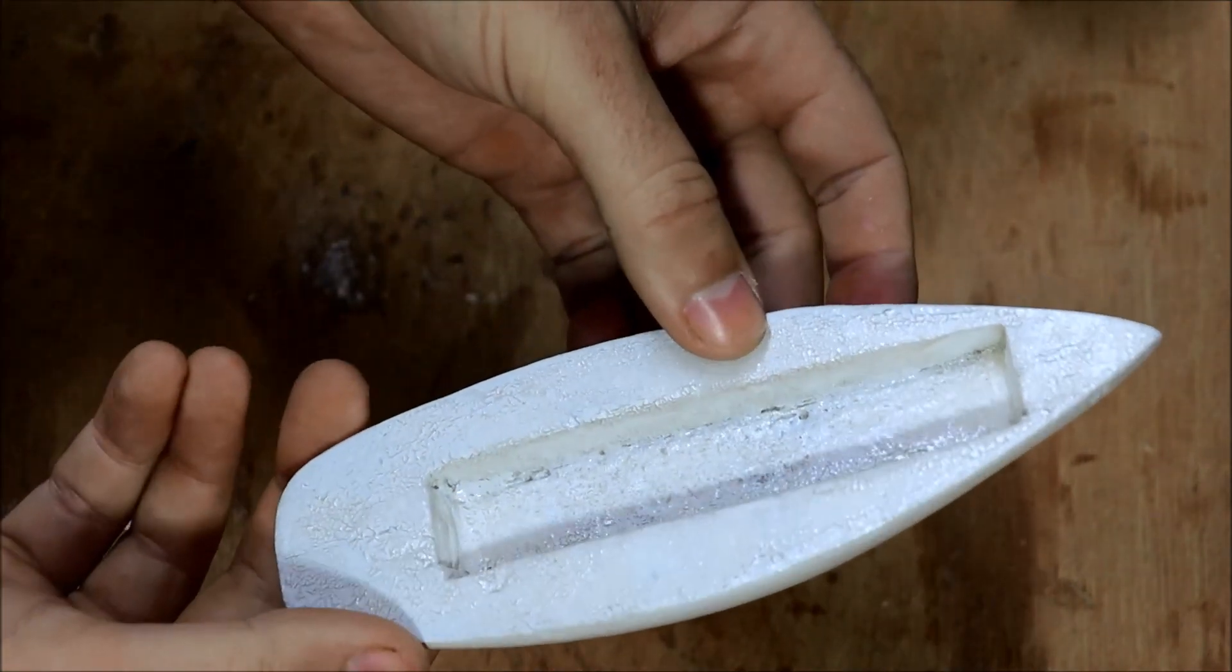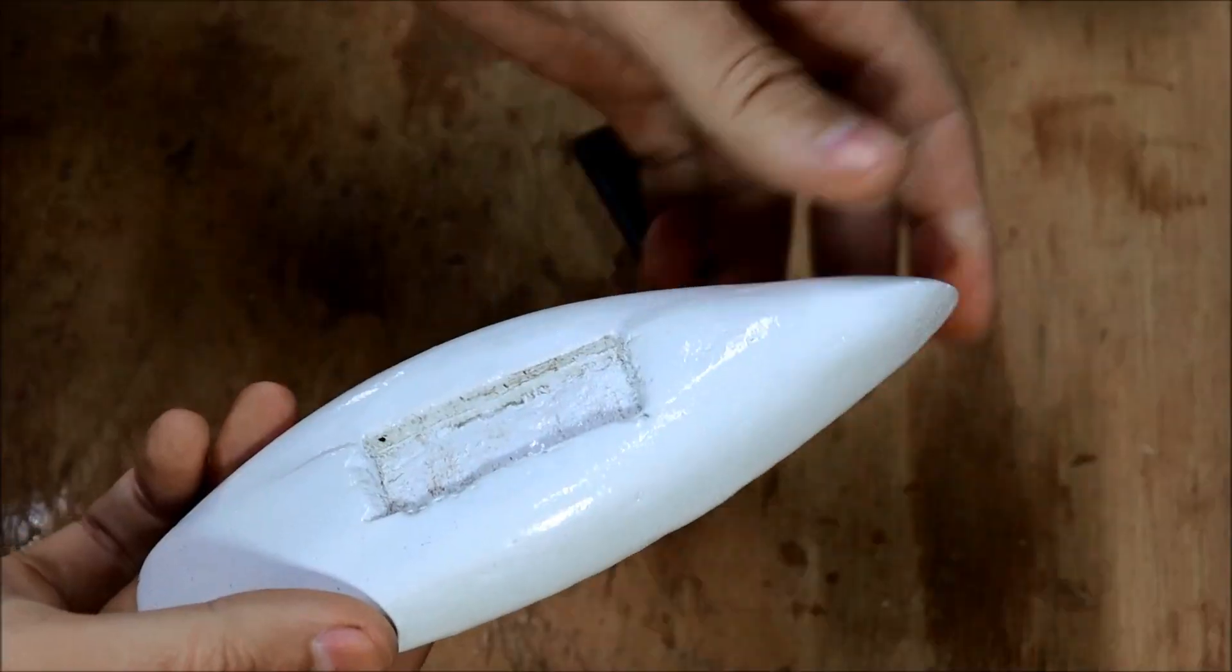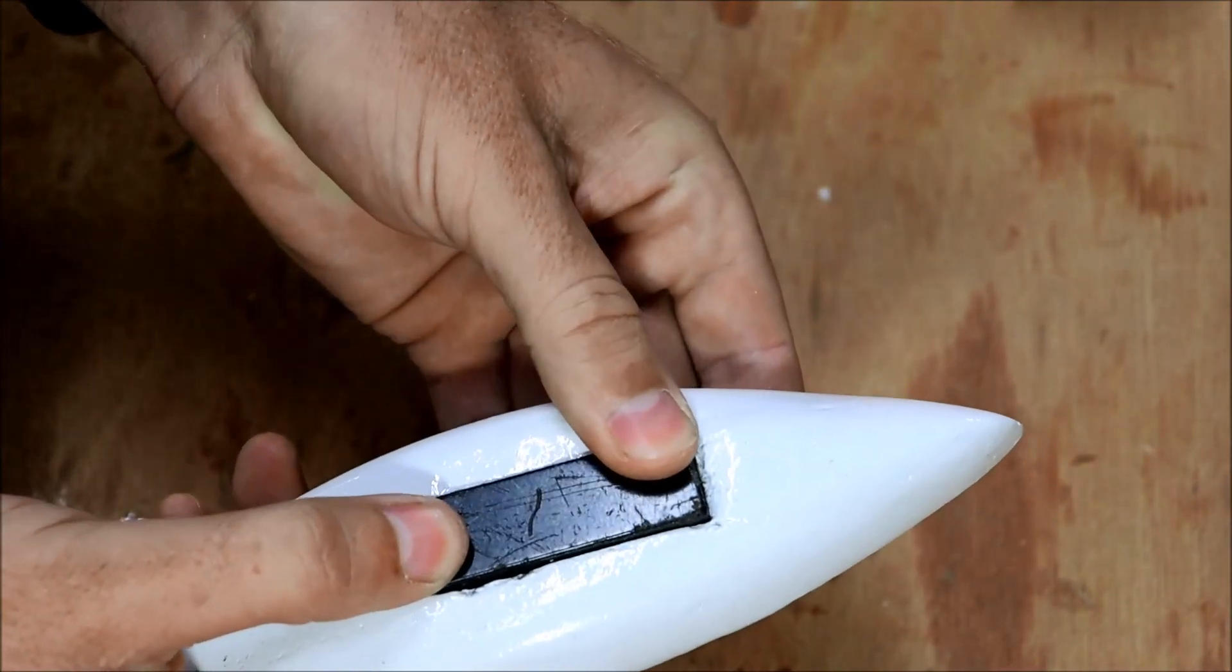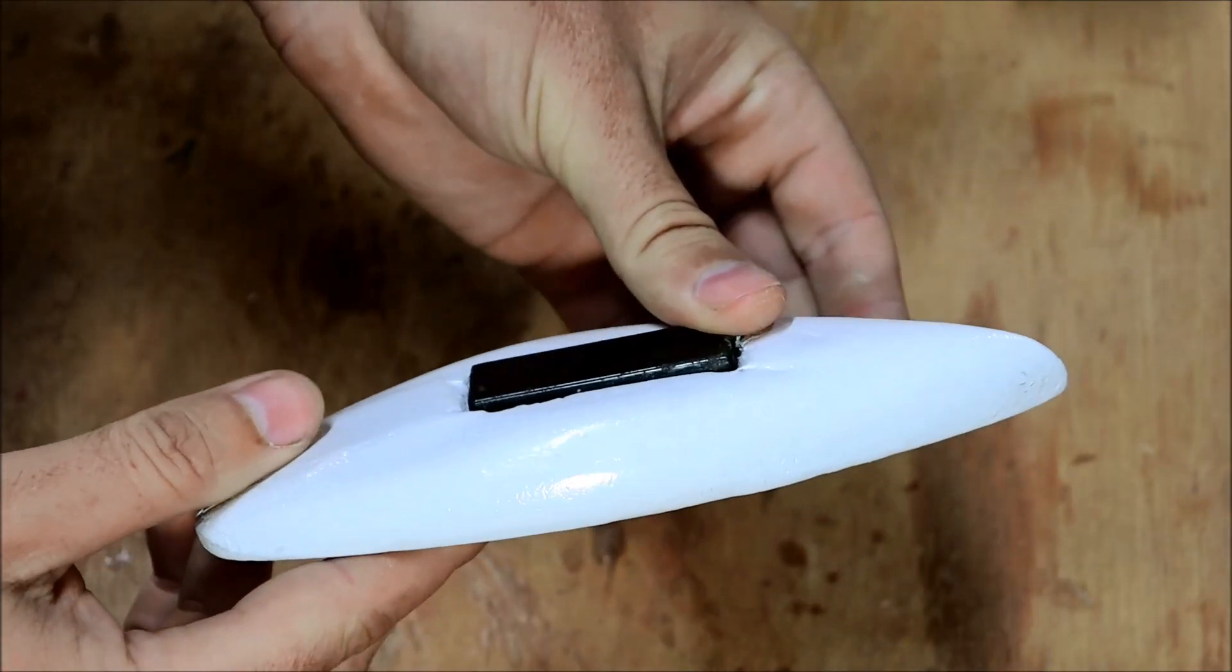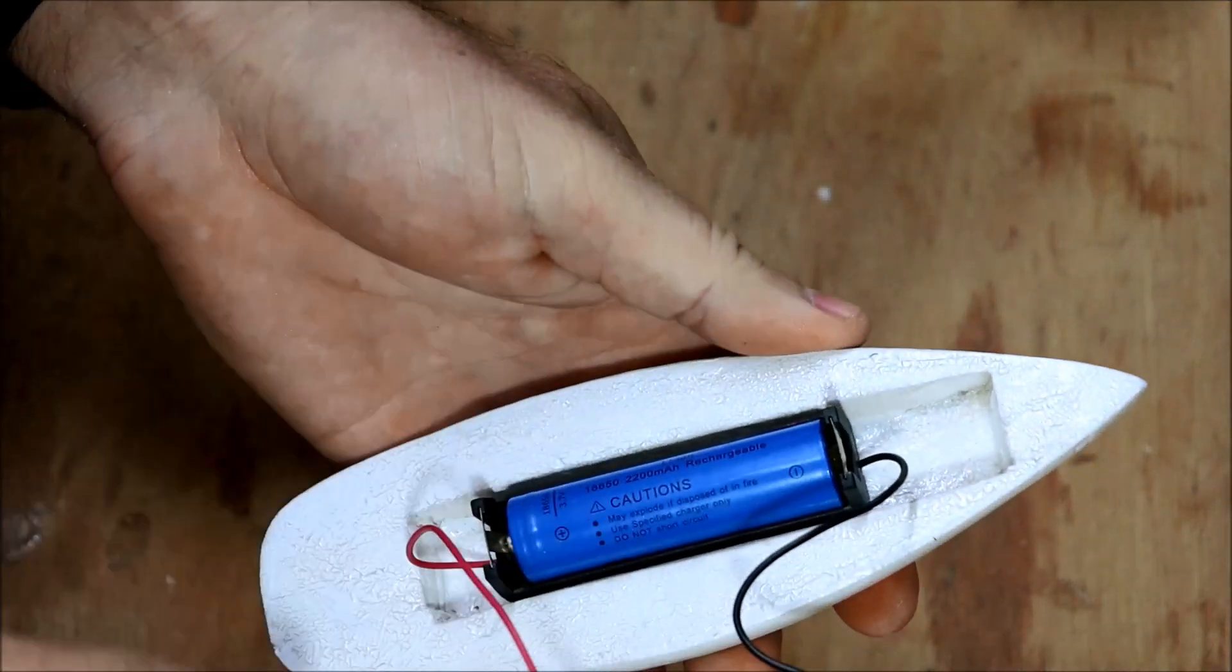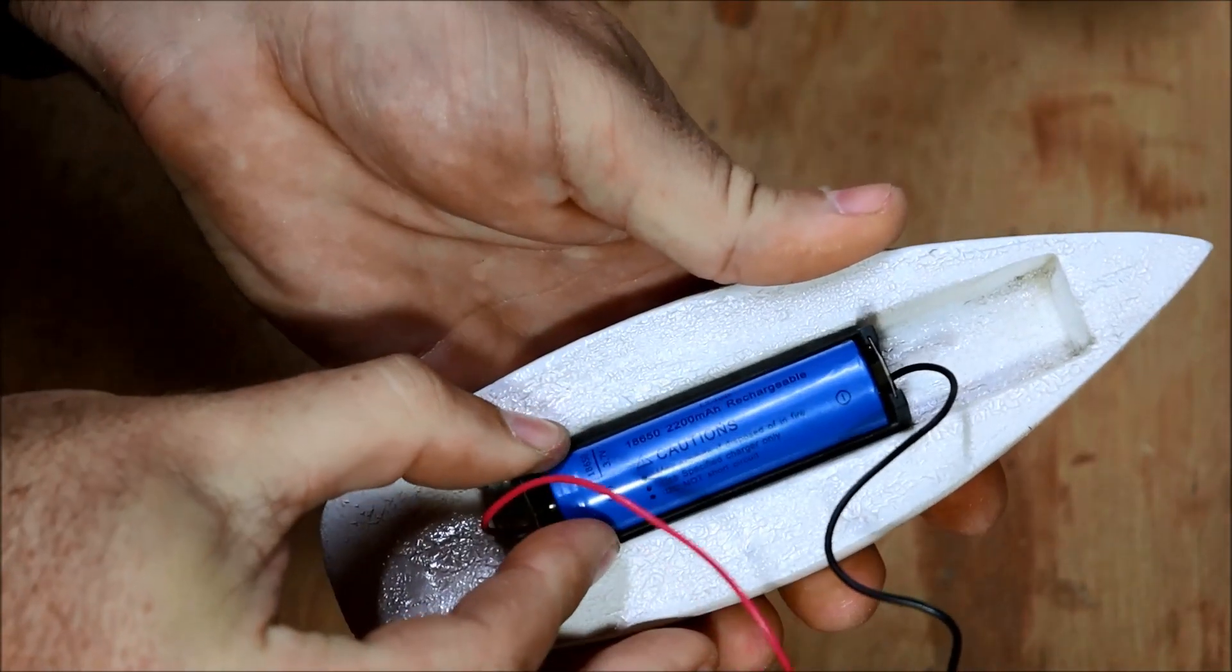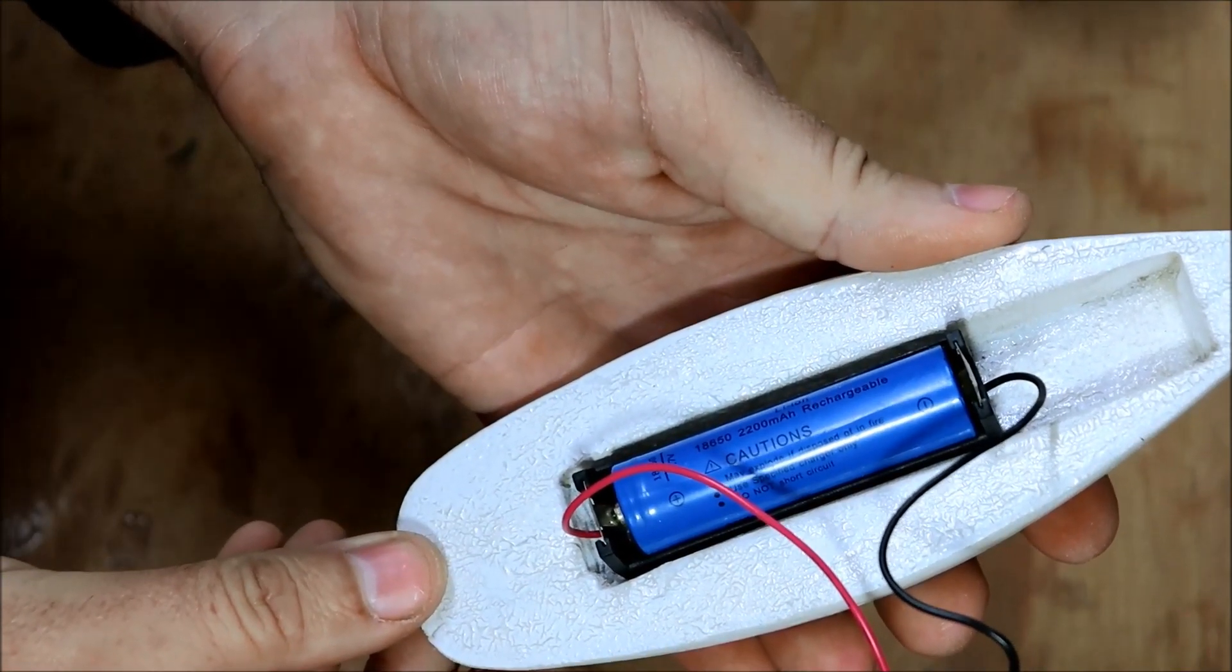This is what we end up with after two coats of floor sealer and a lick of paint. Magnet goes there. It stands proud of the bottom by half its thickness and I'll explain why there is a little bit later. One cell 18650 lithium battery and I can move that to get exactly the right trim. Off to get some electrodes.